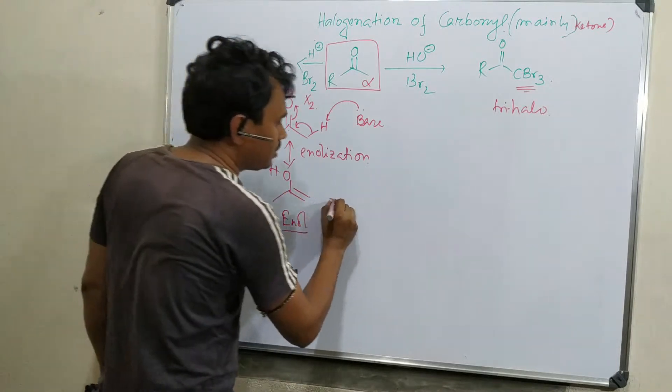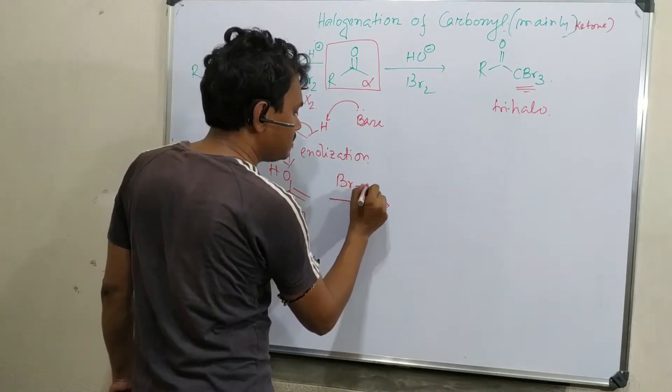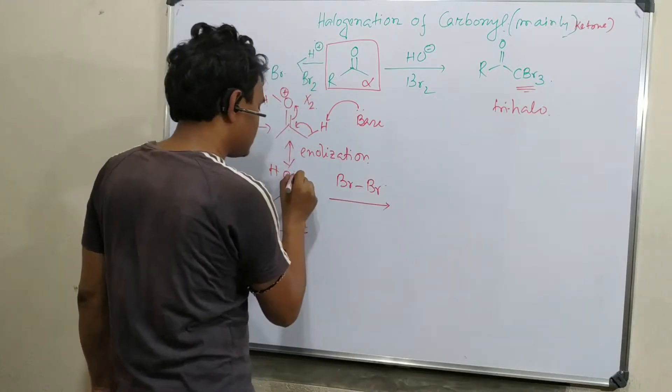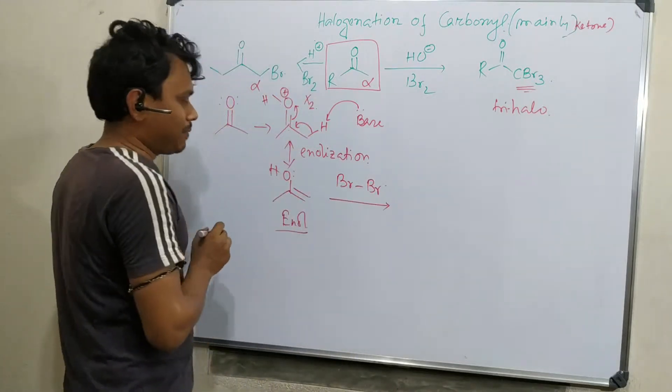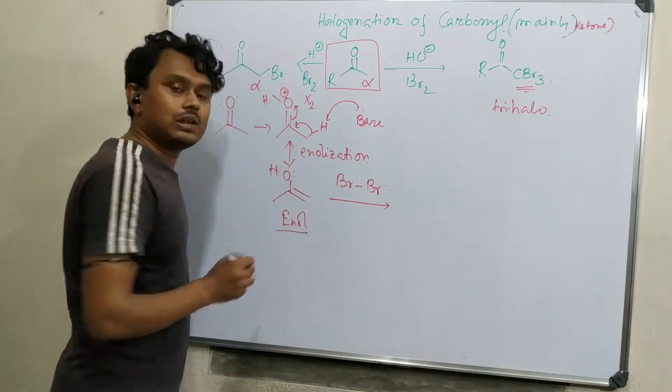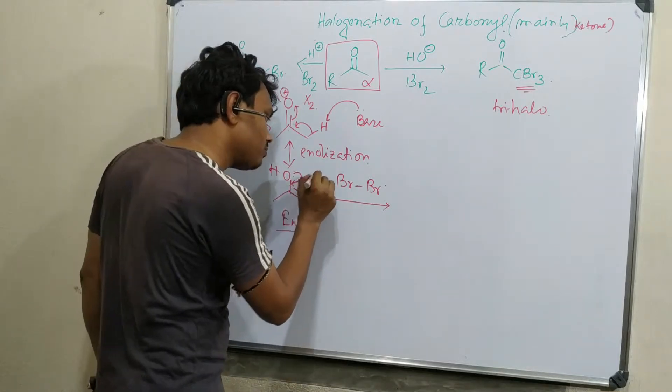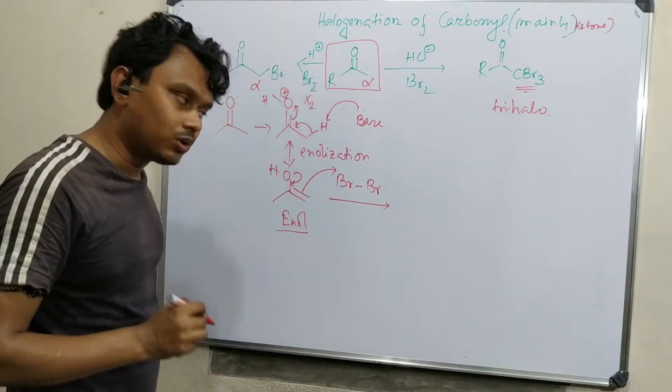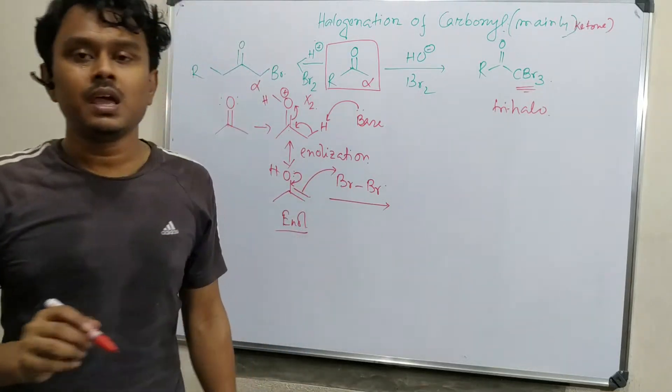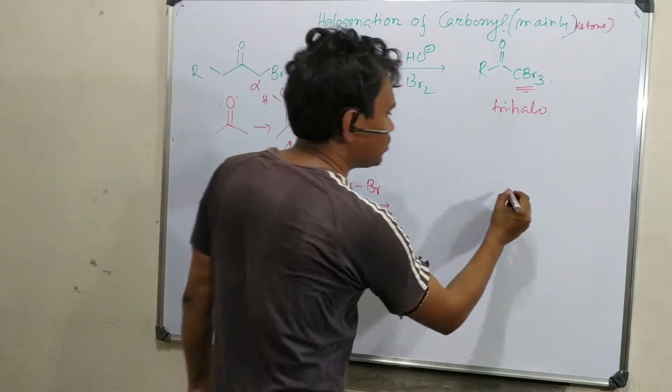Now this enol reacts with halogen like Br-Br. You can expect that attack can happen from this carbon or this oxygen. These halogens are softer in nature, so attack happens from the carbon side. This is more stable.